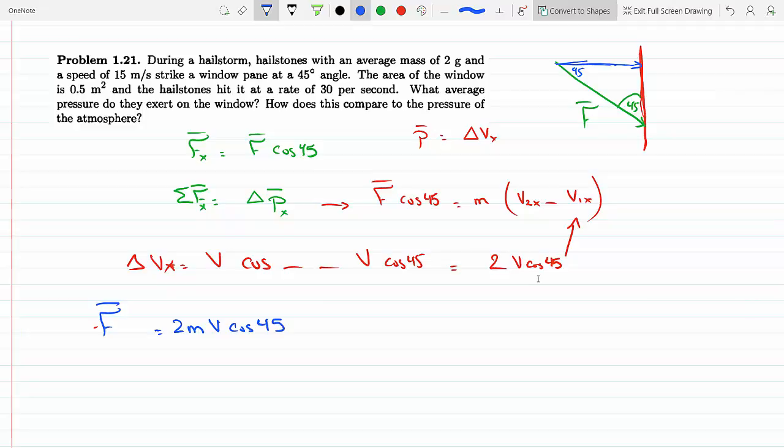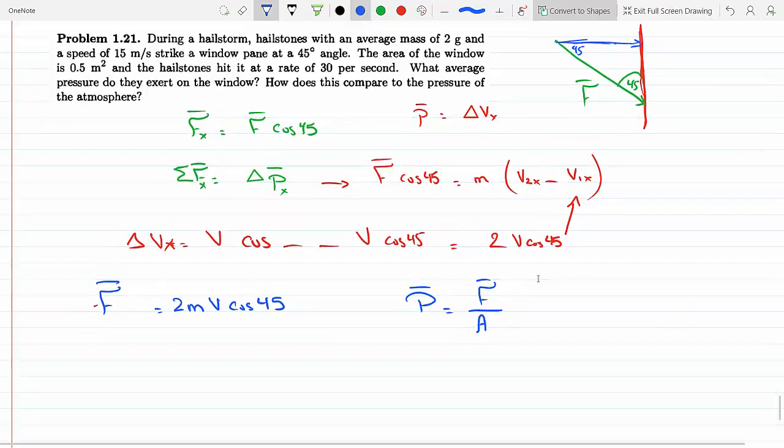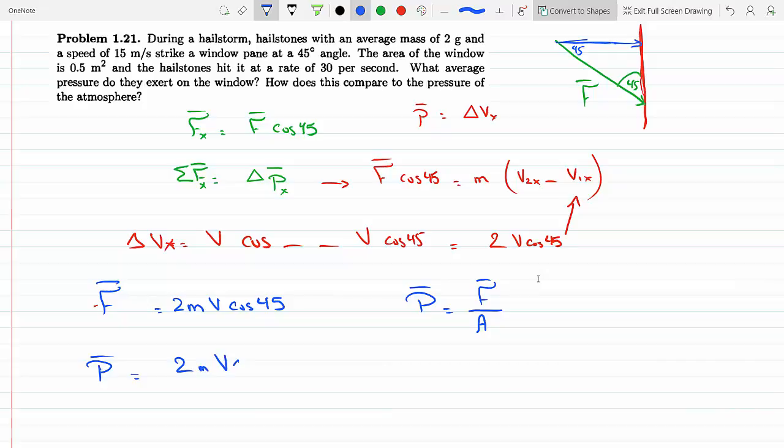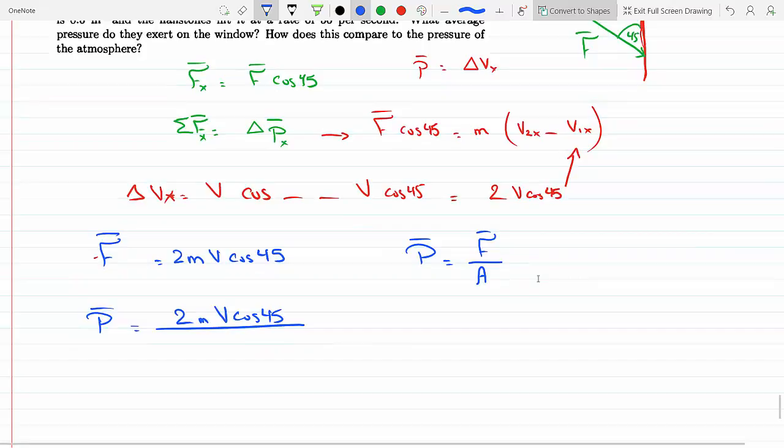I could relate pressure with force because I know that the average pressure is equal to the average force divided by the area. So then I would get P is equal to 2mV cosine 45 divided by the area.